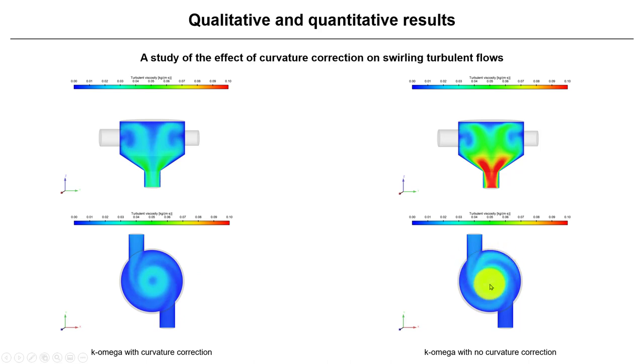Similar behavior you will see in the standard K-epsilon model. Probably the turbulent viscosity values are lower, but you will see that in the core, in the center, you will have large values, which is not physically realistic.